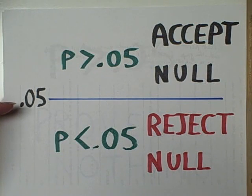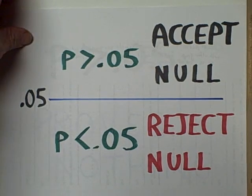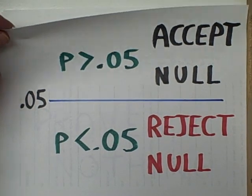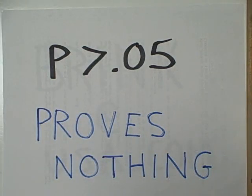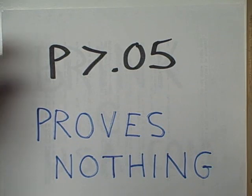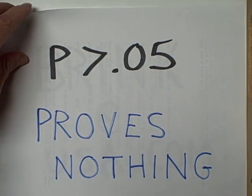When the p-value is less than 0.05, we reject the null, and that opens up the possibility of considering a cause and effect relationship between the variables. In other words, when we do a survey or an experiment and the bottom line in our statistics is p greater than 0.05, we accept the null, and that means we have proved nothing. Our data are simply not significant.